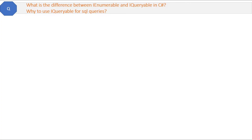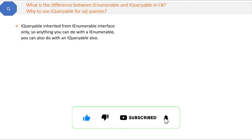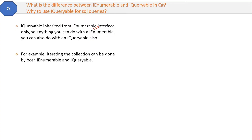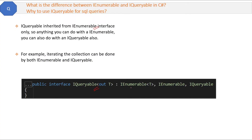Now here is a very important question: what is the difference between IEnumerable and IQueryable in C#, and why use IQueryable for SQL queries? IQueryable inherits from IEnumerable interface, so anything you can do with IEnumerable you can also do with IQueryable. If you right-click and see the definition of IQueryable, you will find that it is inherited from IEnumerable.